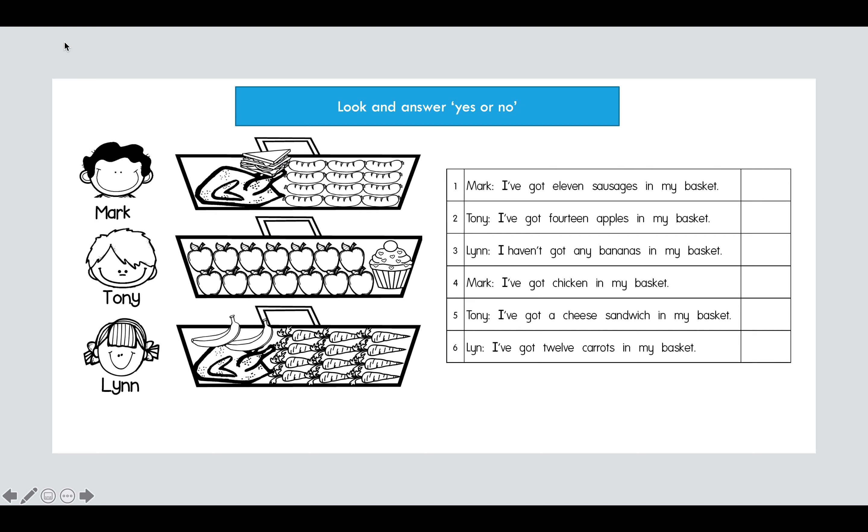Okay, okay, this is Mark and this is his basket. So let's count the sausages that he has: one, two, three, four, five, six, seven, eight, nine, ten, eleven, twelve. Mark has 12 sausages but it is stated here I've got 11 sausages, so the statement is wrong. So the answer is no.